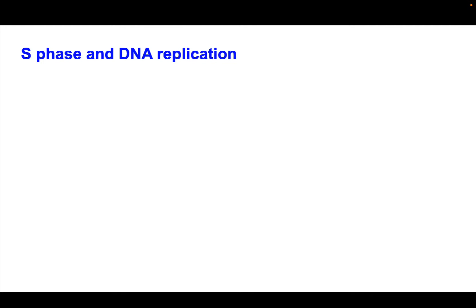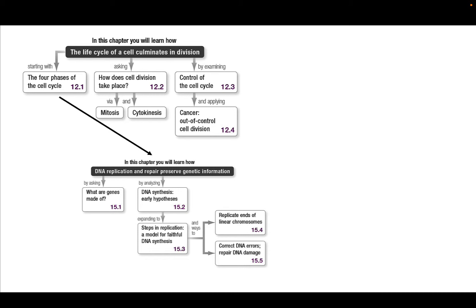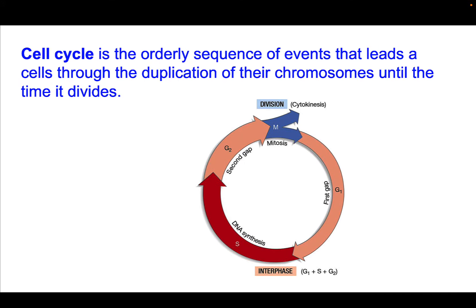We're going to start talking about a really fundamental aspect of cells, and that is cell division. Cell division is coordinated in this process called the cell cycle. Chapter 12 of your book describes the cell cycle. The book starts with describing the process of mitosis, when the chromosomes, or your DNA, is physically separated into two daughter cells. But we're actually going to begin the cell cycle in a different place — we're going to talk first about how the cell copies its DNA before it physically separates it. So we're going to be talking about the cell cycle stage called S phase. The cell cycle is defined as the orderly sequence of events that leads the cells through the duplication of their chromosomes until the time it divides.